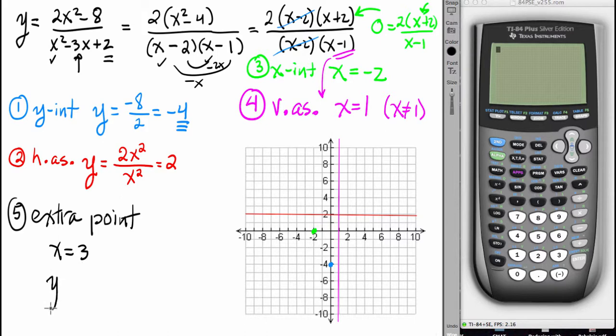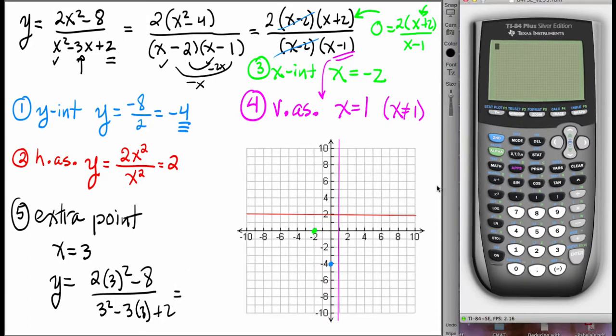And so let's take 3, sub it into the original equation. y equals 2 times 3 squared minus 8 over 3 squared minus 3 times 3 plus 2, which is 18 minus 8 over 9 minus 9 plus 2, 10 over 2 or 5.